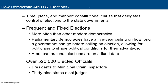In the United States, we have fixed elections every two years for Congress, for the House of Representatives, every four years for president, every six years for the Senate, and those six-year terms are staggered so a third of the Senate is up every two years. There are over 520,000 elected officials in the United States, everything from presidents to municipal drain inspectors, and 39 states elect judges, including Texas. Federal judges are appointed.